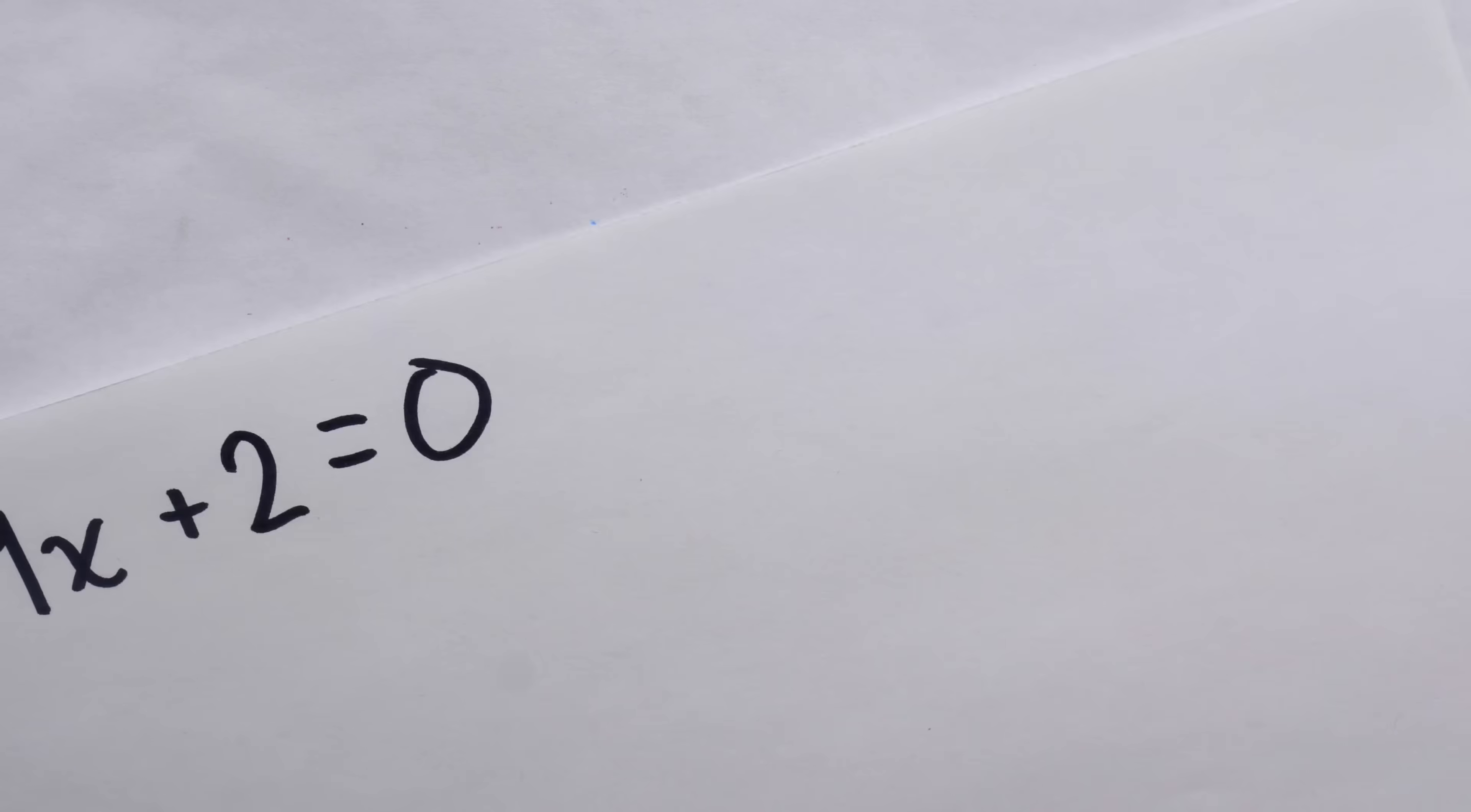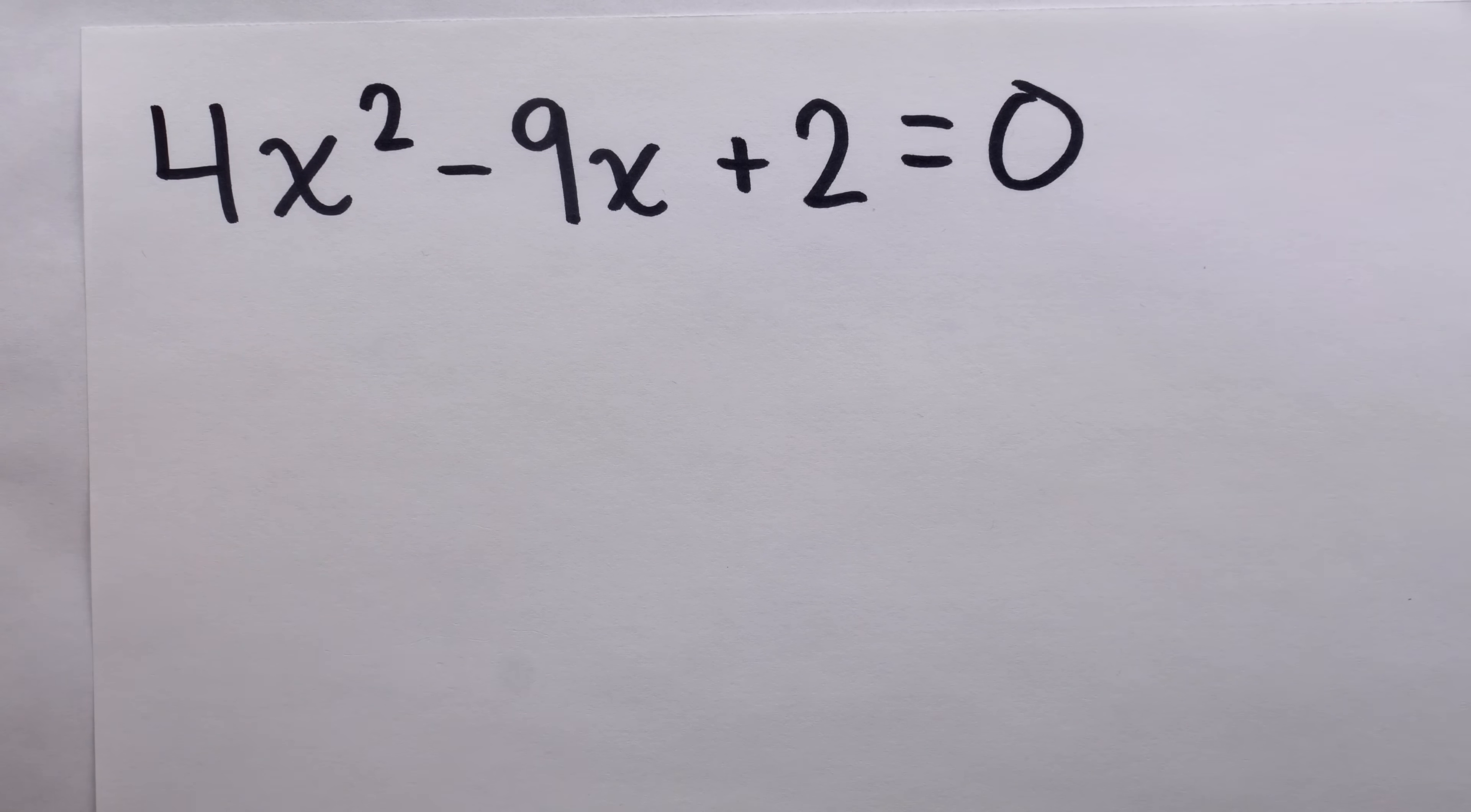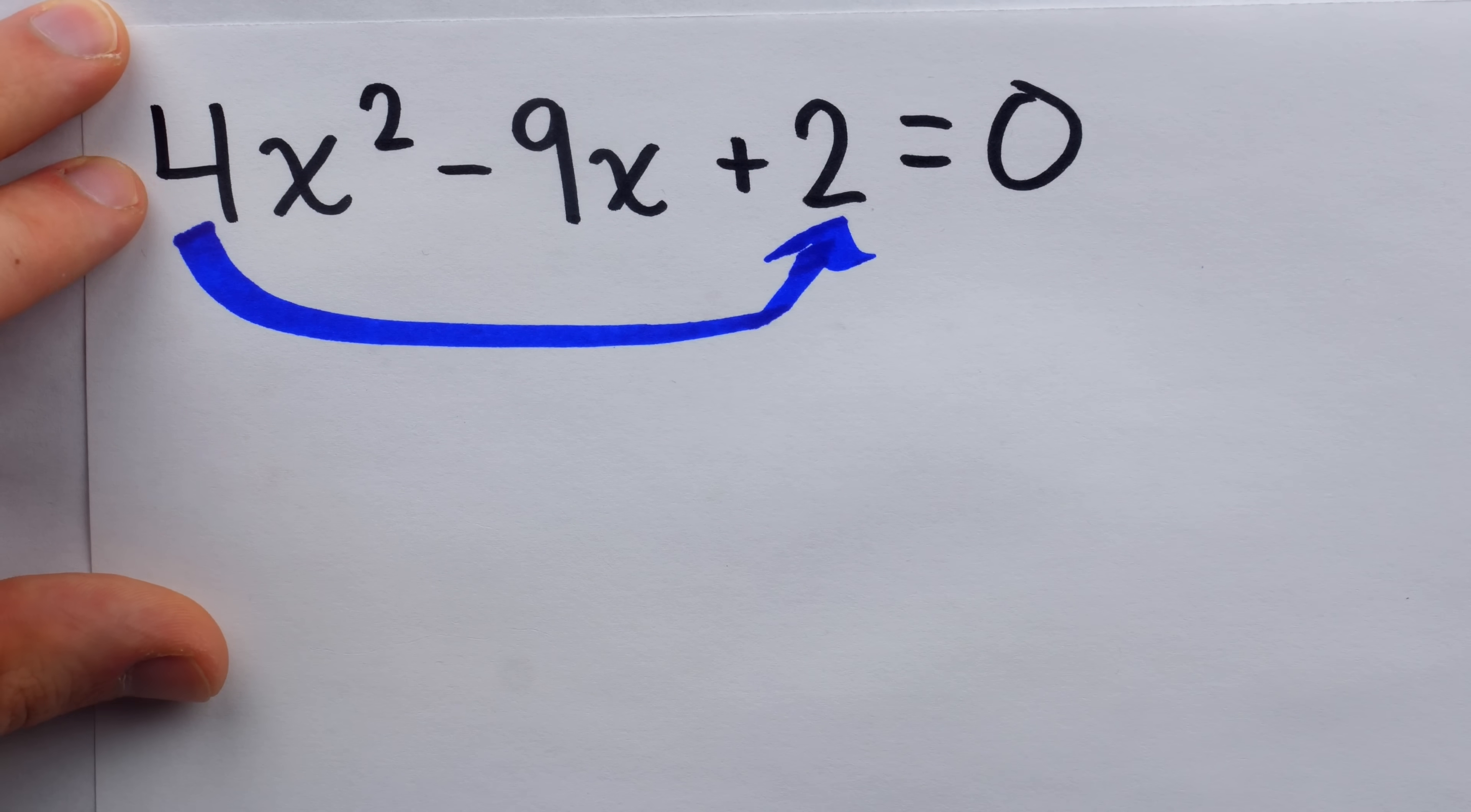Alright gang, let's try one more example before we see why this works. Again, we don't have a leading coefficient of 1 here, we have a leading coefficient of 4. That's a composite number with a bunch of factors, like 1 and 2 and so on. So if we were trying to factor this, we might have to do some guessing and checking. So what we do for the pretty cool trick is take that leading coefficient of 4 and hit the constant term with it.